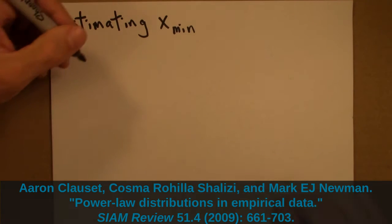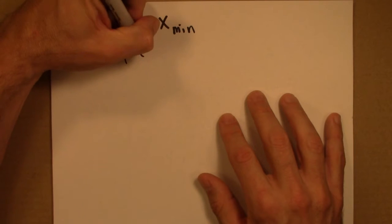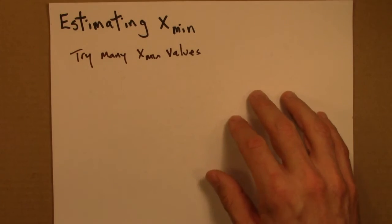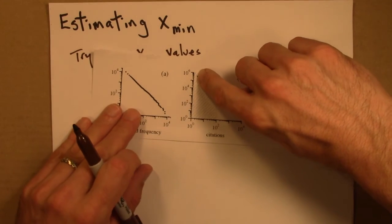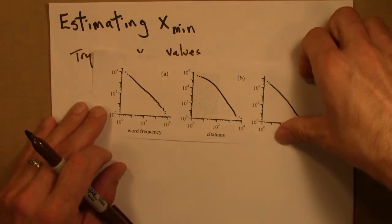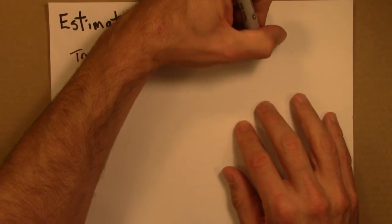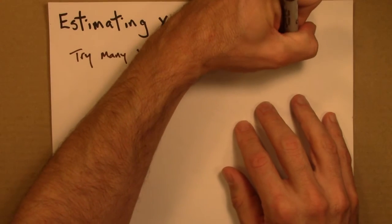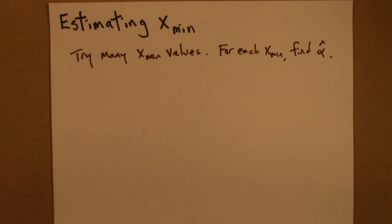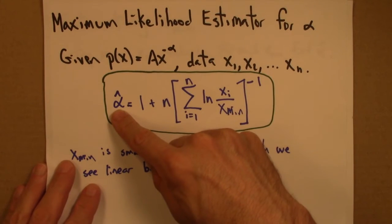So what we do is we systematically try many xmin values. And so you probably want to start with the first data point, then the second, the third, and so on. So you're not sampling at random. Try them all. And for each xmin, find alpha hat. So once you choose an xmin, it's no big deal to come up with the estimate for the exponent.